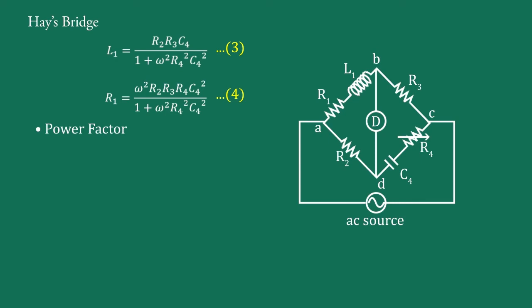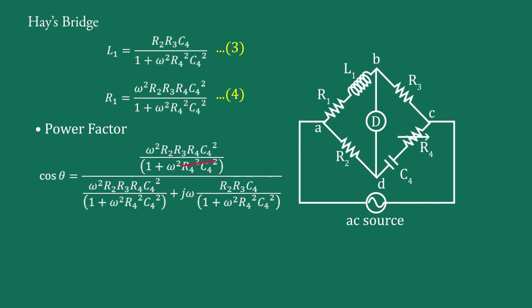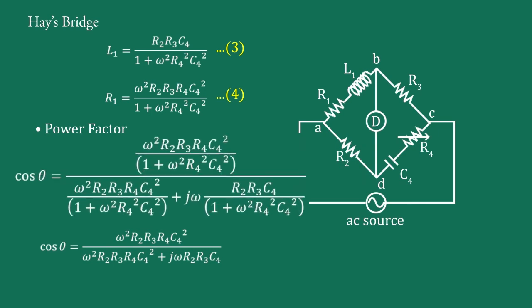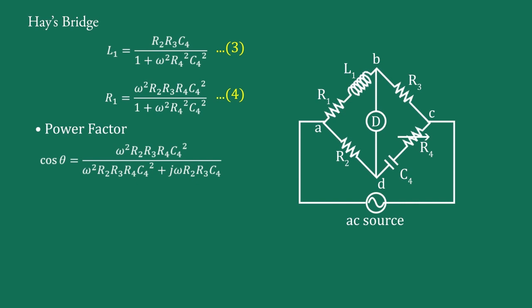Now, power factor cos(theta) for an R1-L1 series connection is defined as cos(theta) equals R1 upon (R1 + j·omega·L1). Substituting values of R1 and L1 from equations 3 and 4, the bracket part cancels. Therefore, cos(theta) equals omega²·R2·R3·R4·C4² upon (omega²·R2·R3·R4·C4² + j·omega·R2·R3·C4). Dividing numerator and denominator by omega²·R2·R3·R4·C4², we get cos(theta) equals 1 upon (1 + j upon omega·R4·C4), or equivalently 1 upon (1 − 1 upon j·omega·R4·C4).